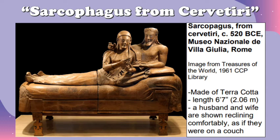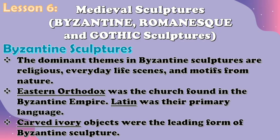Next is also a sarcophagus called the Sarcophagus from Cerveteri, made in 520 BC. This is made of terracotta, with a length of 6'7" or 2.06 meters. It is a sculpture of a husband and wife shown reclining comfortably as if they were on a couch. Now in the last lesson in this module, Lesson 6 is about medieval sculptures, including Byzantine, Romanesque, and Gothic sculptures.